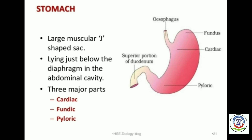Stomach: The stomach is a J-shaped, thick-walled, bag-like muscular organ located on the left side of the abdomen. It is the widest part of the alimentary canal and can hold up to two liters of food at a time. The cells lining the stomach secrete digestive juices, hydrochloric acid, and mucus. The digestive juices help in the digestion of proteins.